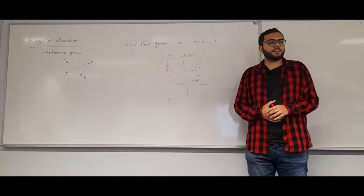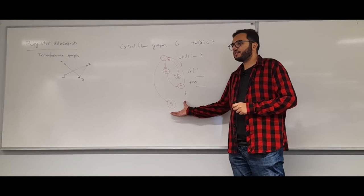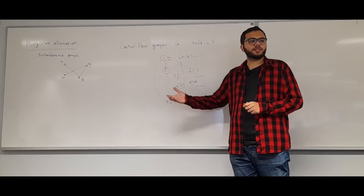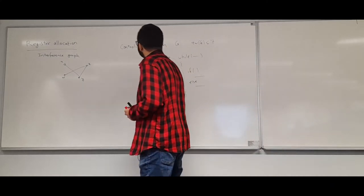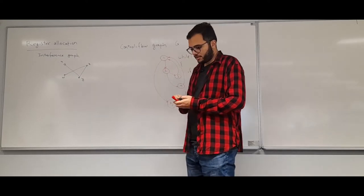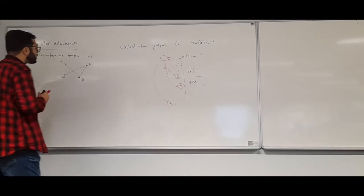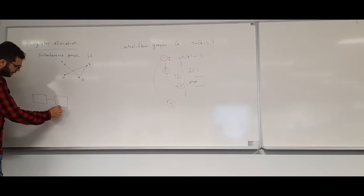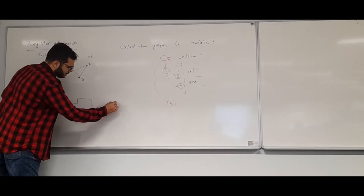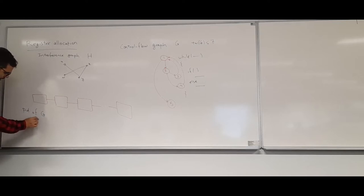This problem is NP-hard. Let's see how we can use the parameterization by the treewidth of the control flow graph, plus basic approximation techniques, to get an approximation algorithm. First, let's consider a simplified case where the control flow graph has bounded pathwidth. Suppose I have a path decomposition of G with width W.